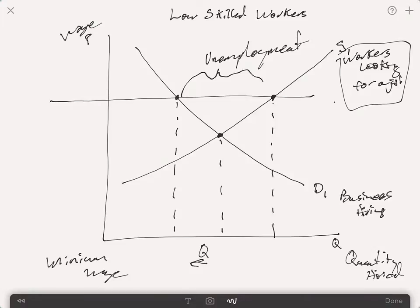And that is the effect of a minimum price, in this case a minimum wage, a price floor on the market for low-skilled workers.